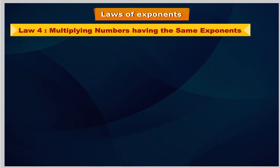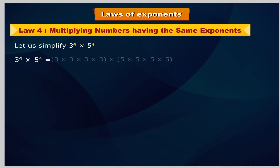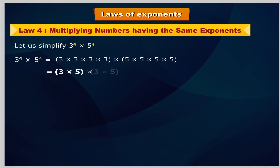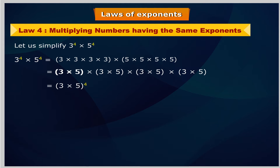Law 4: Multiplying numbers having the same exponents. Let us simplify 3 to the power 4 multiplied by 5 to the power 4. This equals 3 multiplied by 3 multiplied by 3 multiplied by 3, within brackets, multiplied by 5 multiplied by 5 multiplied by 5 multiplied by 5, equal to 3 multiplied by 5, within brackets, to the power 4, equal to 15 to the power 4.